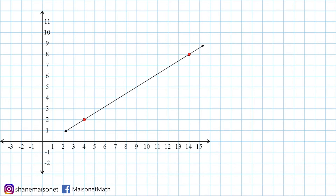Instead of memorizing a formula, let's start by figuring out what would be in the middle of the x values and what would be in the middle of the y values. So if we examine the x values of the two points shown on the screen, we can see that we have x values of 4 and 14.